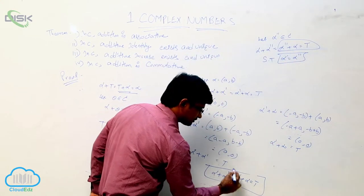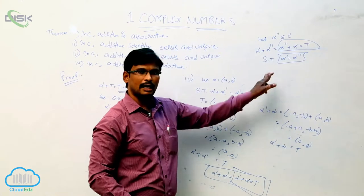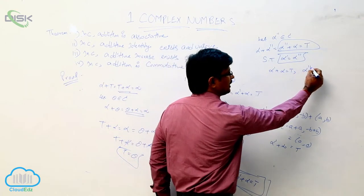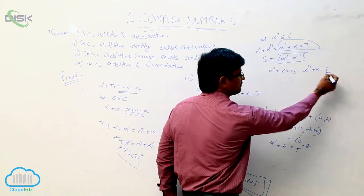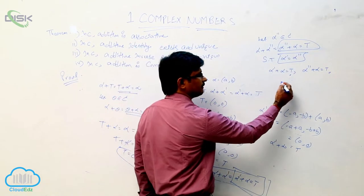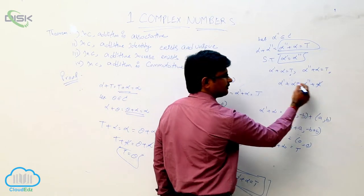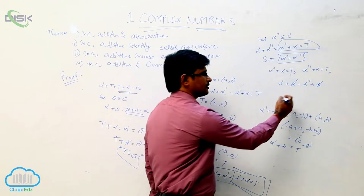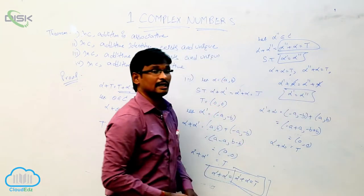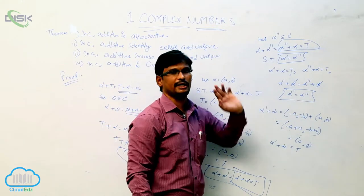Observe these two values. Both have the same right-hand side: alpha_dash plus alpha equal to t, and alpha_double_dash plus alpha equal to t. Since the RHS parts are the same, we can equate the left-hand sides, and cancelling alpha from both sides gives alpha_dash equal to alpha_double_dash.